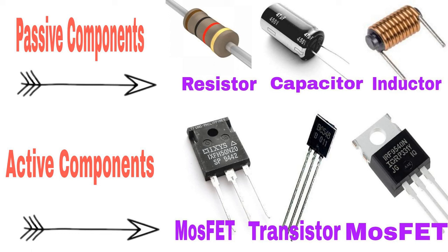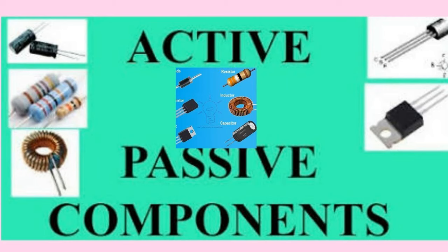Understanding the properties and applications of passive components is crucial for designing and troubleshooting electronic systems. Let's explore active components in more detail. Transistors are semiconductor devices that amplify or switch electronic signals. They come in different types — bipolar junction transistors (BJT) and field effect transistors (FET) — and are fundamental in electronic circuits for signal amplification and switching applications. The symbols for NPN and PNP bipolar junction transistors typically consist of three layers and arrows indicating the direction of current flow.